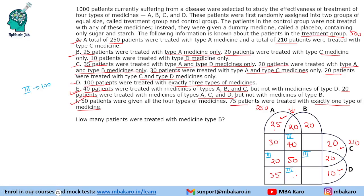Now we have used all the statements. To find the remaining values, we subtract from the totals. For A with total 250: adding the known regions — 20, 30, 50, 50, 50, 50 — gives 220 plus the A&B&D region. So the A&B&D region is 30. For the 3-medicine total of 100: we have 40, 20 and 30, giving 90, so the remaining 3-medicine region is 10.